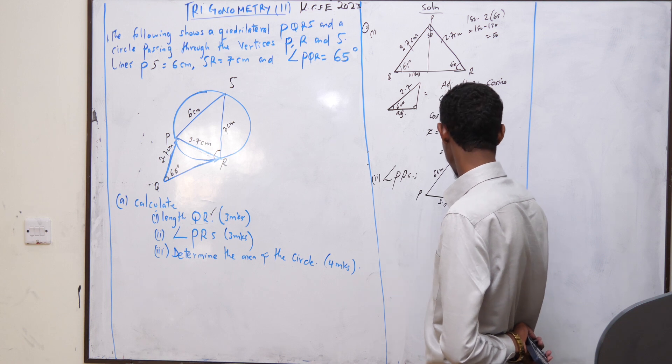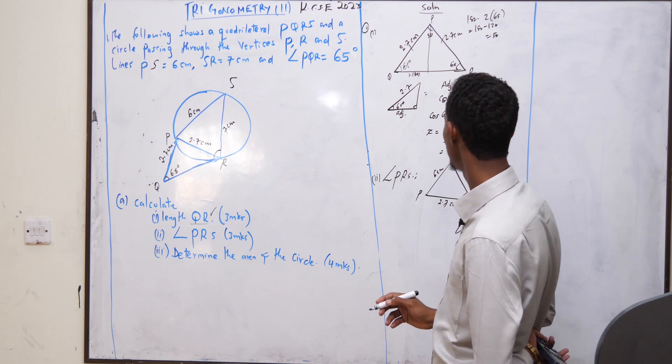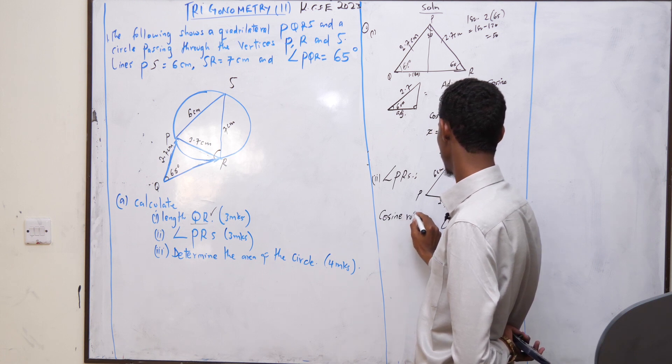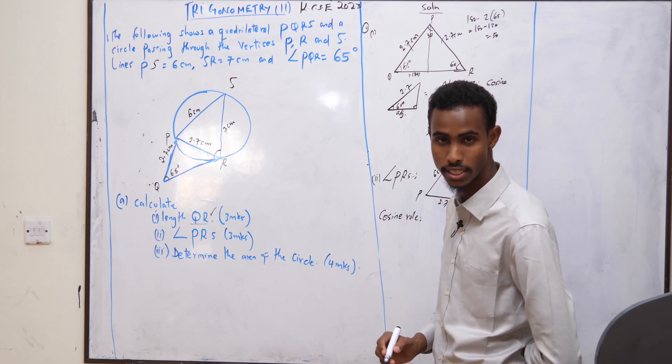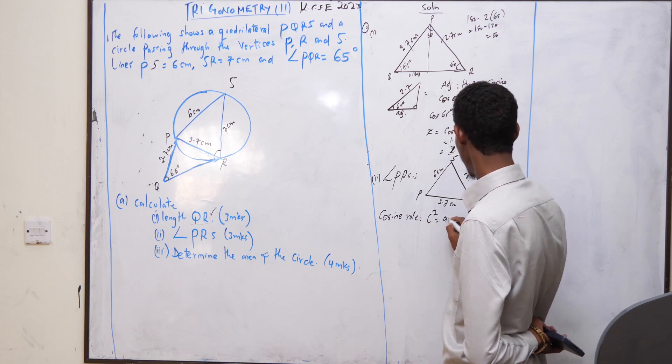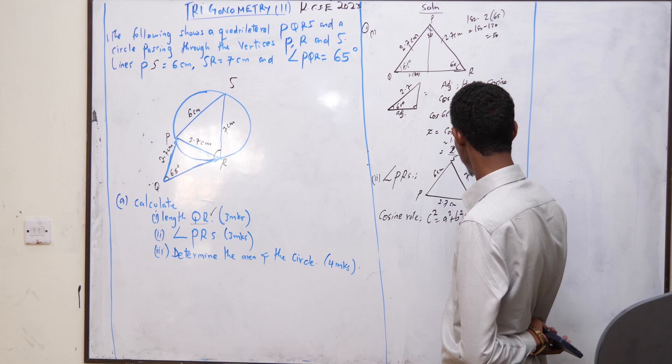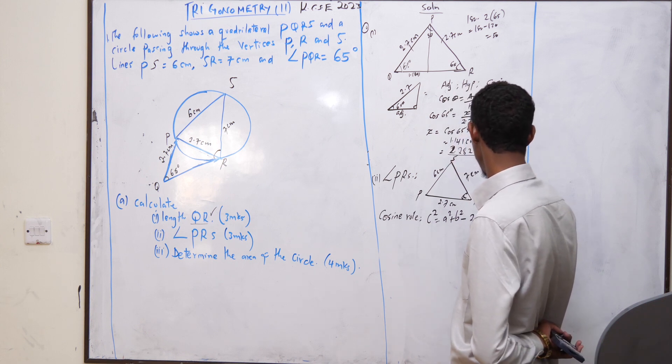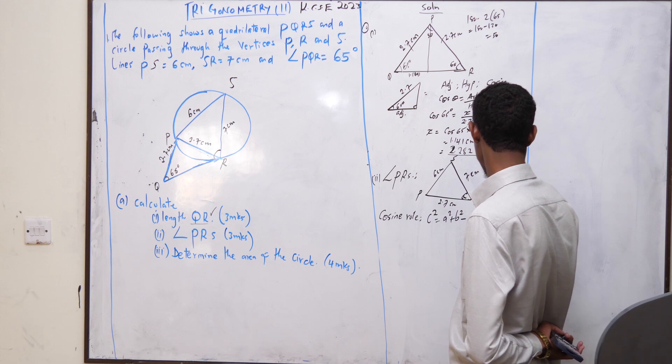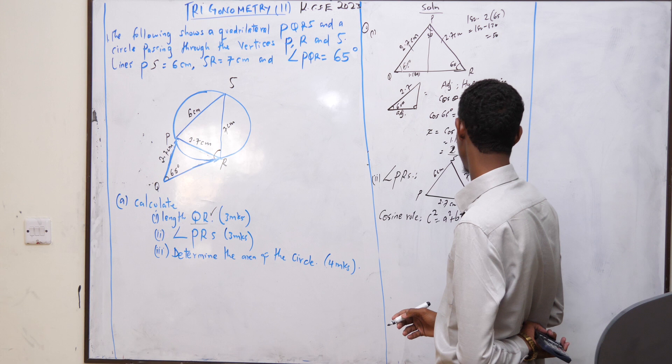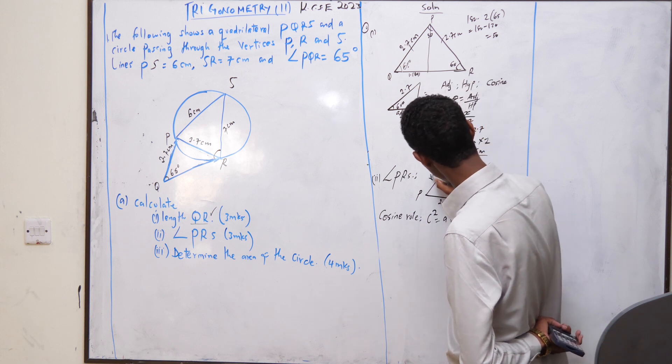We want to find that angle. We use cosine rule. Cosine rule. How is cosine rule? It states C squared equals A squared plus B squared. Here it becomes R, here it becomes small s, here it becomes P.